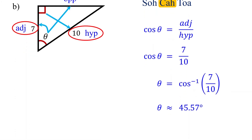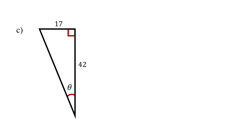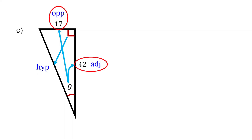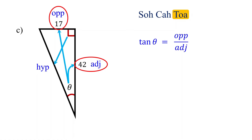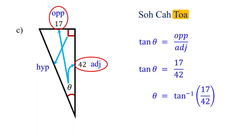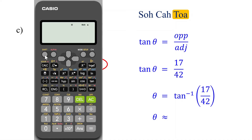Now it is your turn — please pause the video and give it a try. Label the sides: opposite the right angle is the hypotenuse; opposite angle theta is the opposite side; the remaining side is the adjacent side. You are given the adjacent and opposite sides. According to SOHCAHTOA, it is the tangent function that relates these two sides. So tangent of theta equals 17 over 42, which is equivalent to theta equals the inverse tangent of 17/42. The inverse tangent of 17 over 42 is approximately equal to 22.04 degrees.